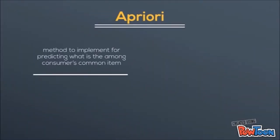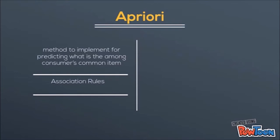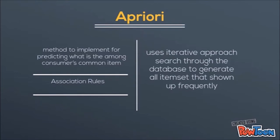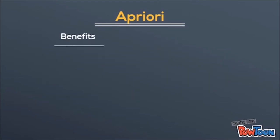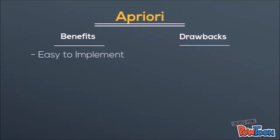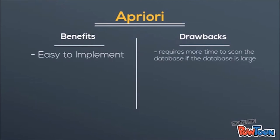A-priori is a method used for predicting what the common items are among consumers. The principle of the A-priori algorithm is association rules — it uses an iterative approach to search through the database to generate all item sets that show up frequently. Here are the benefits and drawbacks of using A-priori: for the benefit, it is easy to implement.